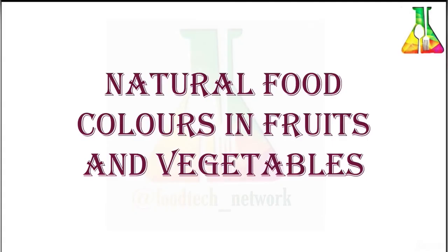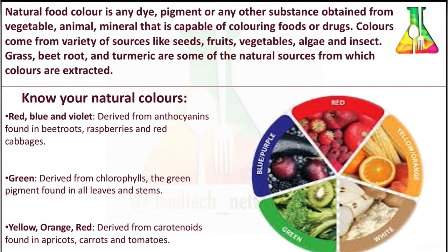This lecture will be based on natural food colors in fruits and vegetables. Colors obtained from a variety of sources like seeds, fruits, vegetables, algae, insects, grass, beetroot, and turmeric are some of the natural sources from which colors are extracted. Colors extracted from natural sources are known as natural food colors.